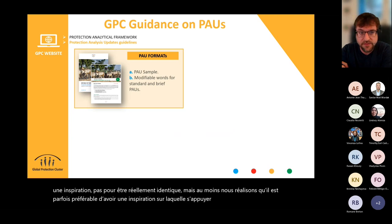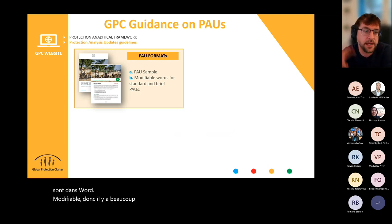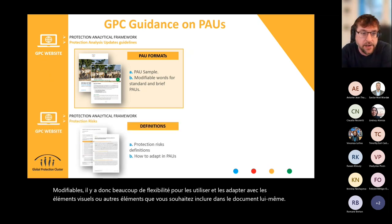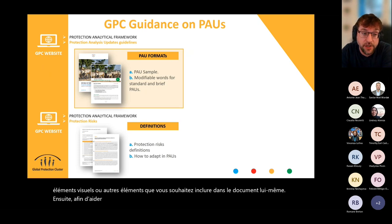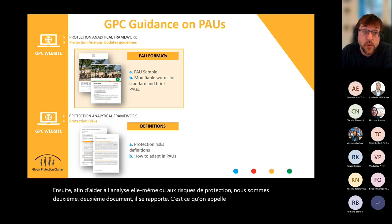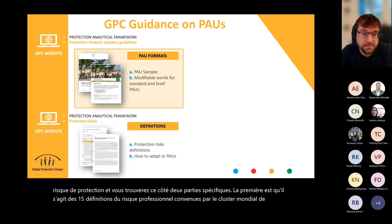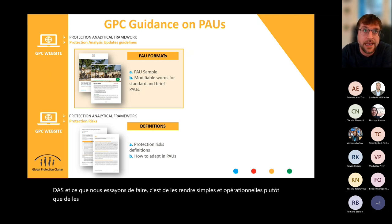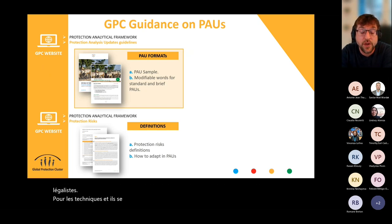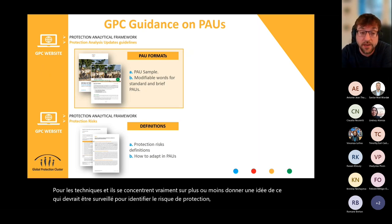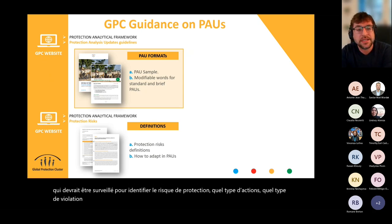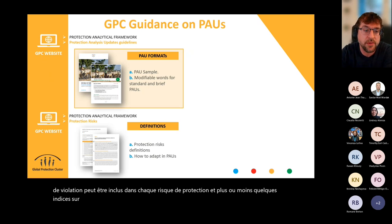The two documents are in Word and are modifiable, so there is plenty of flexibility to use and adapt them with whatever visual elements or other elements you want to include. To help with the actual analysis of protection risks, there is a second document called the Protection Risk Explanatory Note. Inside you will find two specific parts: one contains all 15 definitions of protection risks agreed by the Global Protection Cluster and AORs — made simple and operational rather than legalistic or technical — focusing on what should be monitored to identify protection risks, what types of violations are included in each, and hints of what information and data can support monitoring and analysis.